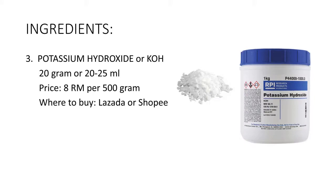Three: potassium hydroxide or KOH. We need roughly about 20 grams or 20 ml of it. If you have a small balance, you can use it to weigh the potassium. Or if you don't have one, you can put the potassium first in a measuring cup up to 20 to 25 ml.